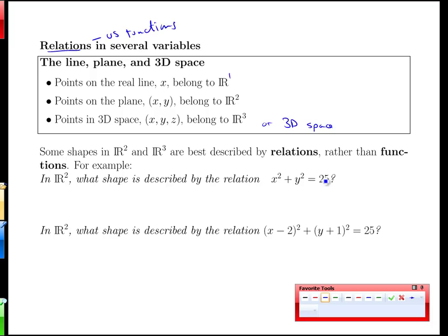For example if we were in R2 and asked ourselves what shape is defined by the relation x squared plus y squared equals 25. I think we'd all leap pretty quickly to a circle.